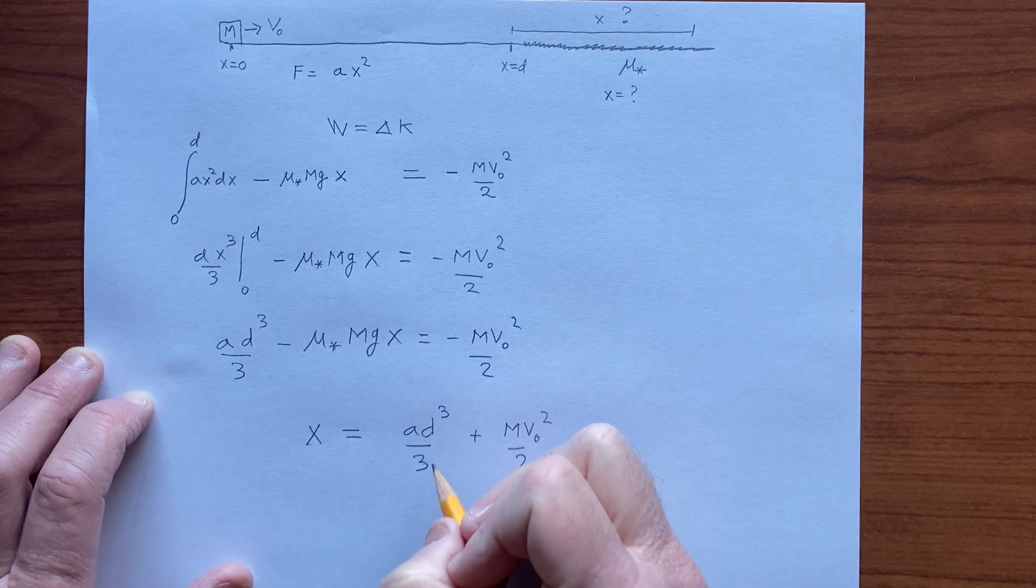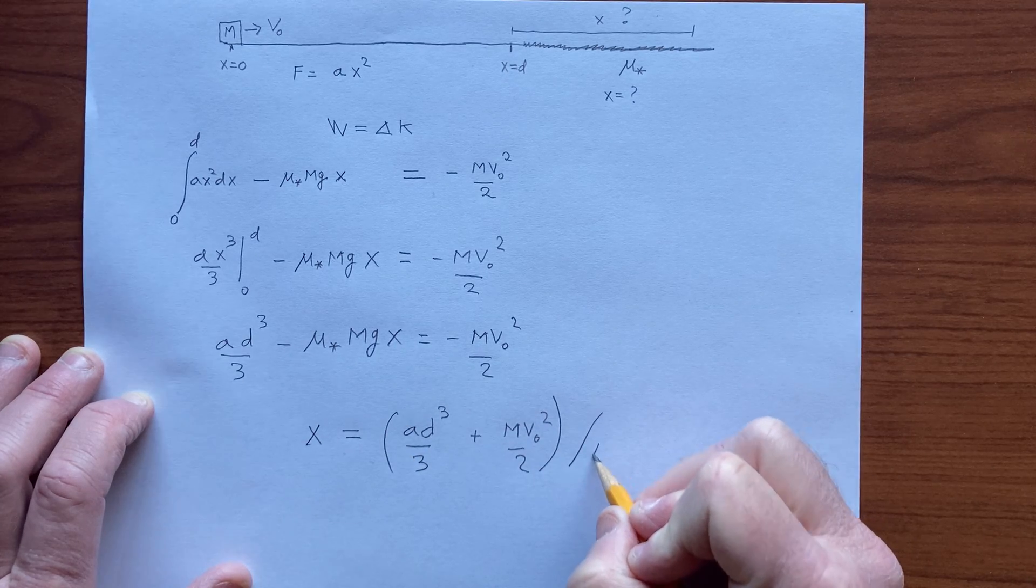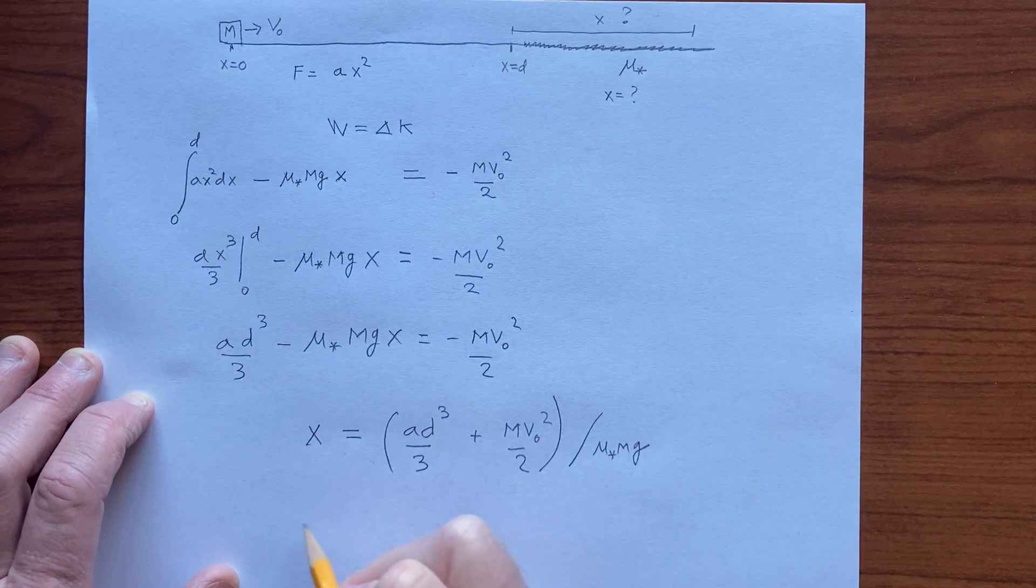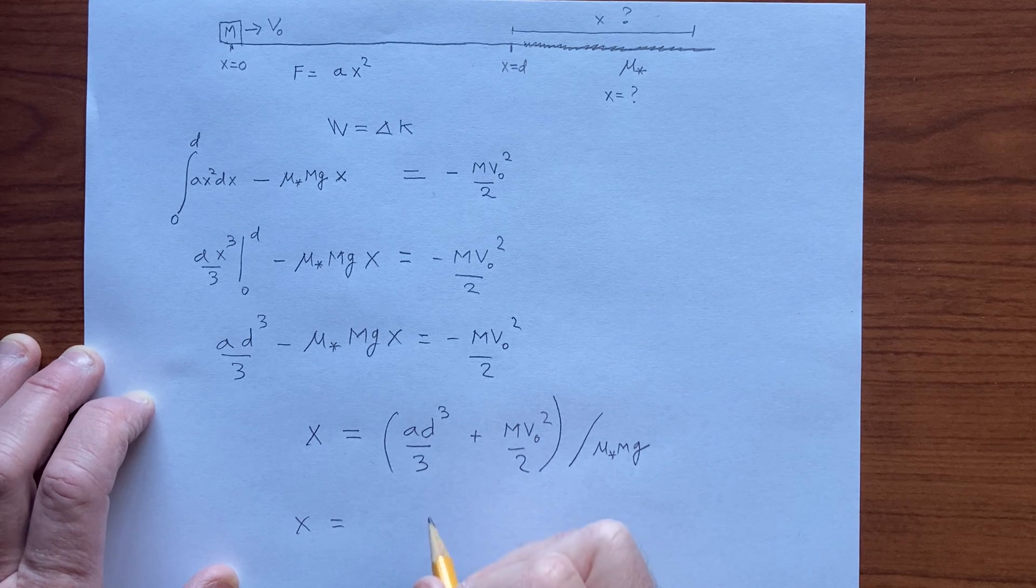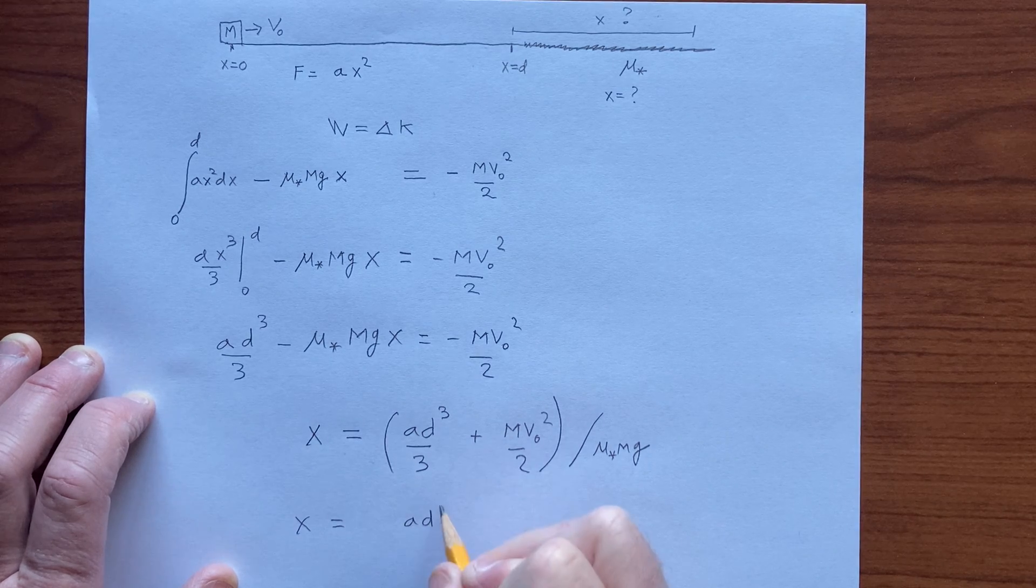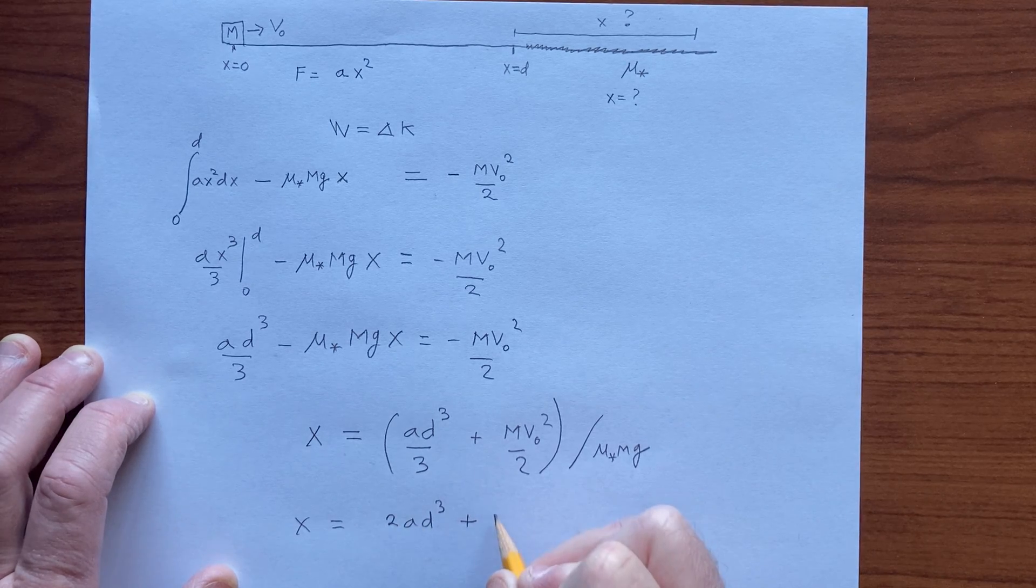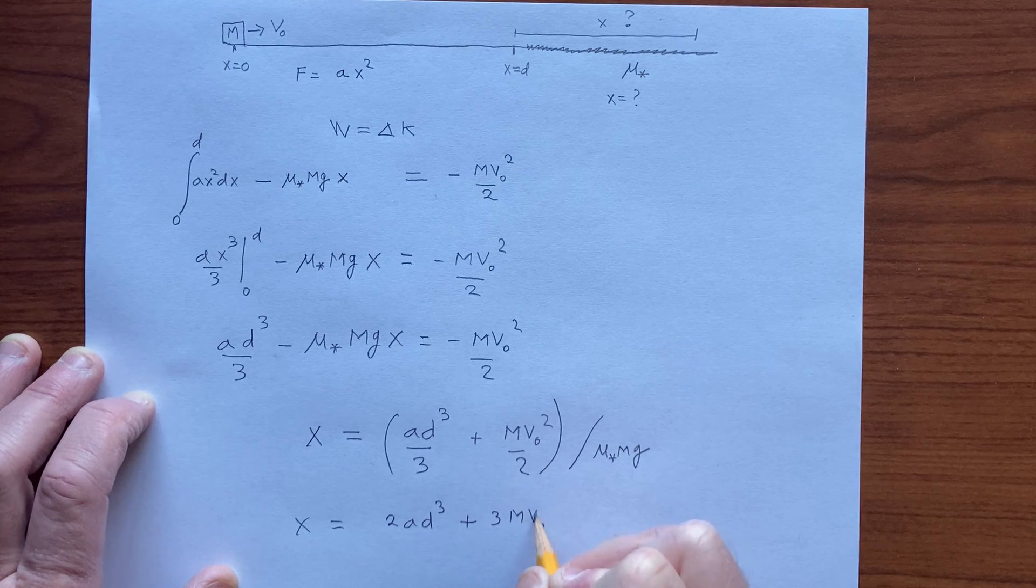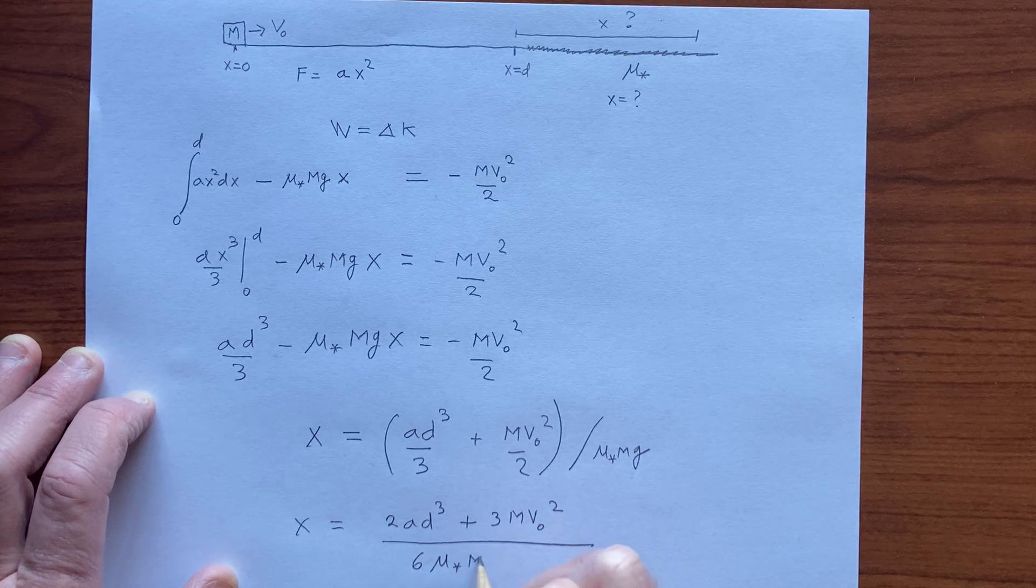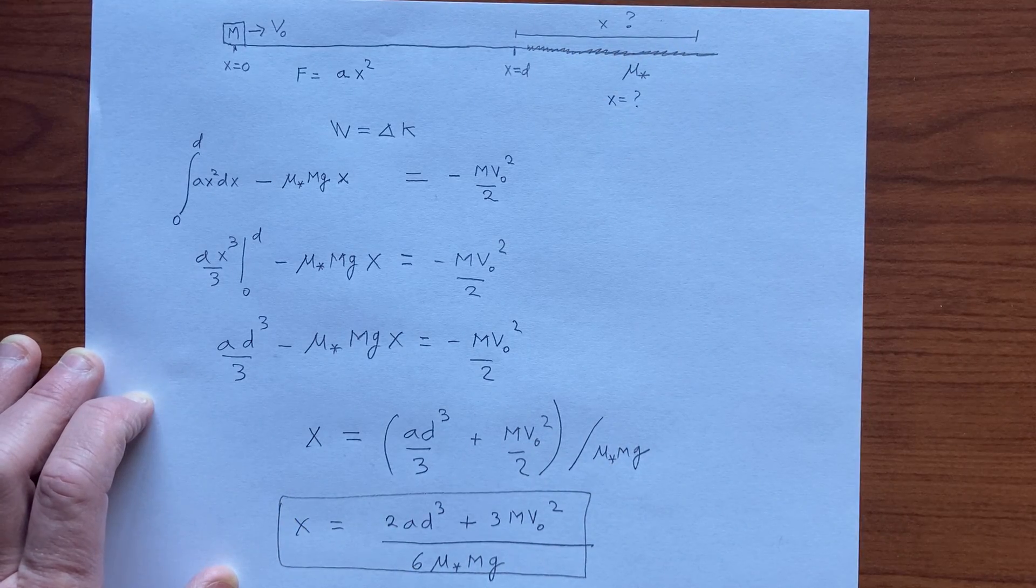This gives us x equals 2 a d cubed plus 3 m v-naught squared, all over 6 mu star mg. And that's how far the object travels along the surface with friction.